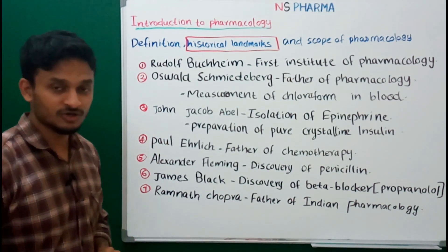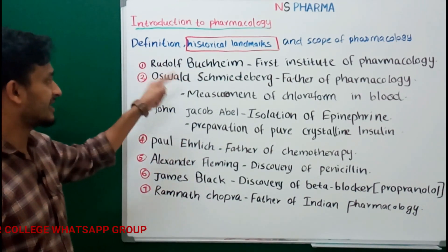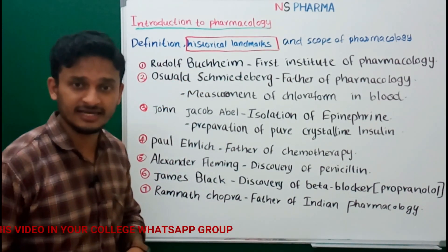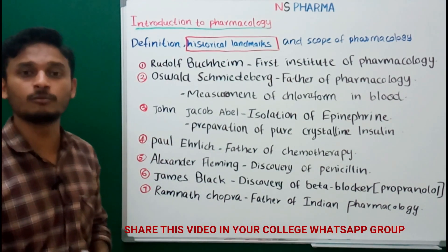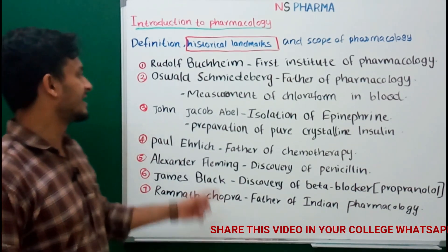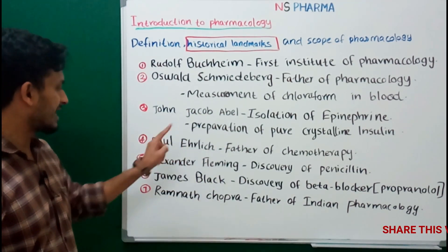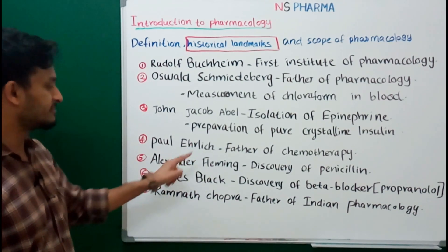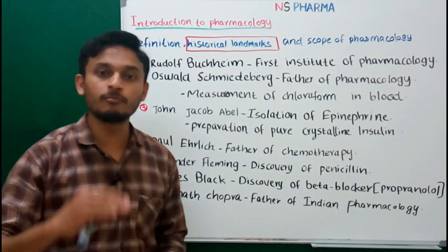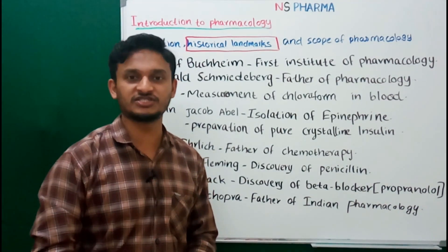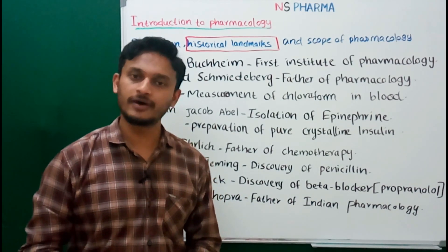To recap the seven scientists: Rudolf Buchheim, Oswald Schmiedeberg — father of pharmacology, John Jacob Abel, Paul Ehrlich, Alexander Fleming, James Black, and Ramnath Chopra — father of Indian pharmacology. These are the most important seven scientists in the historical landmarks of pharmacology.